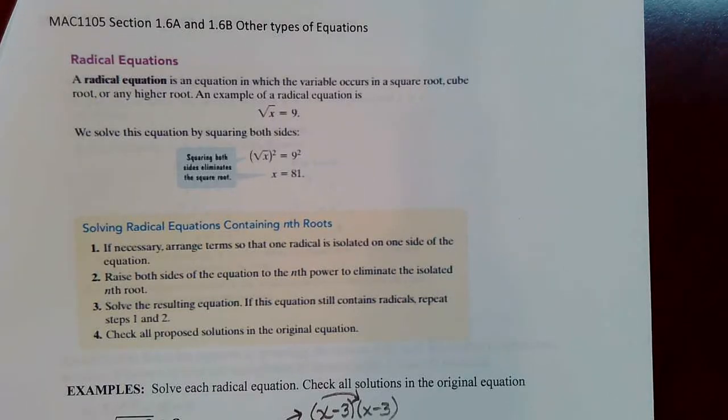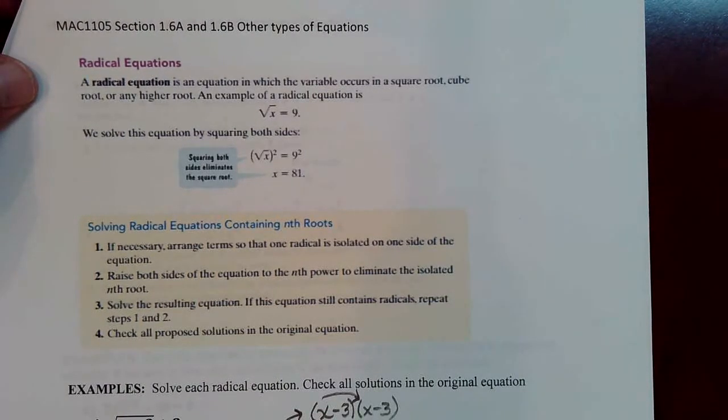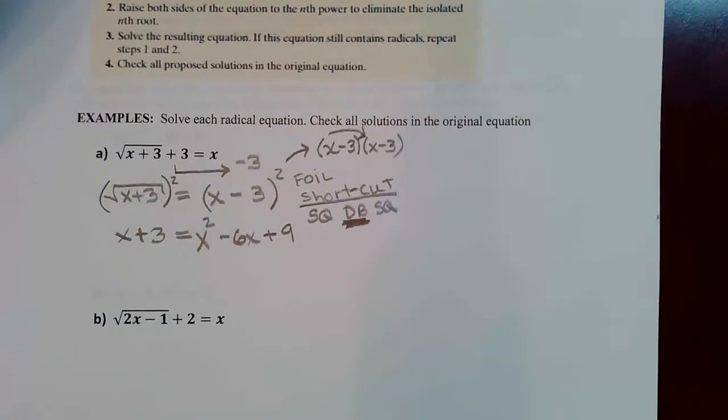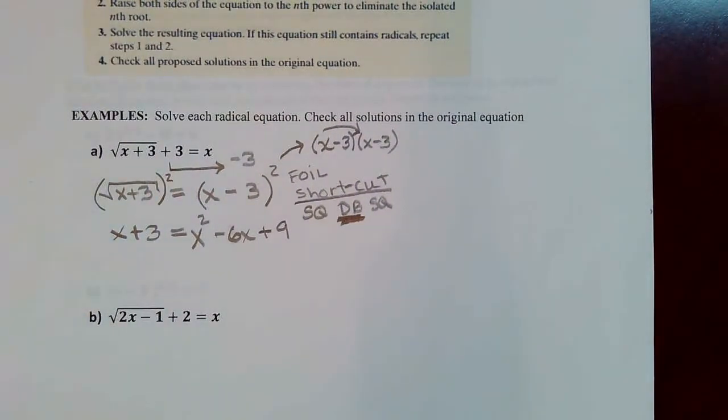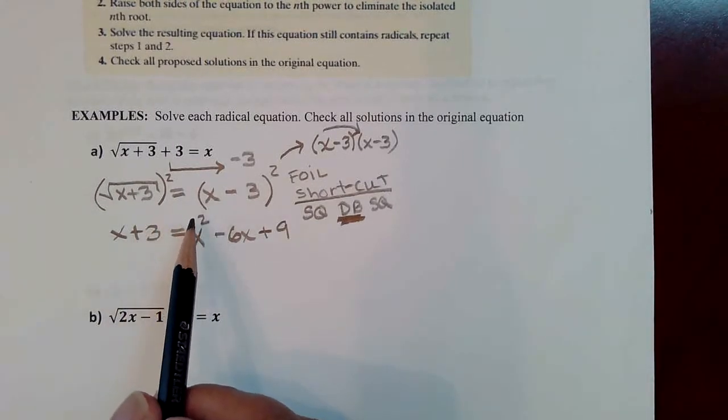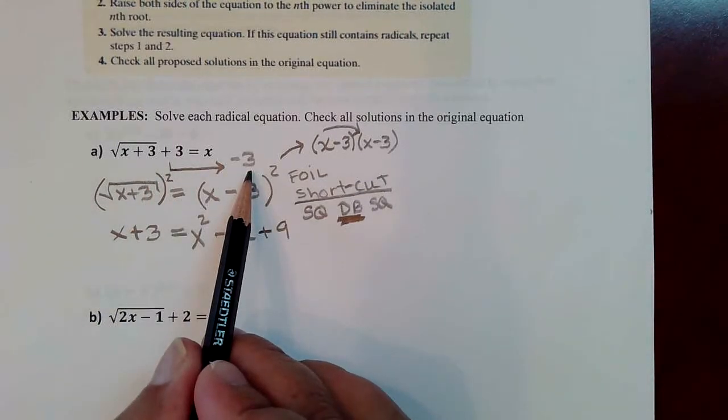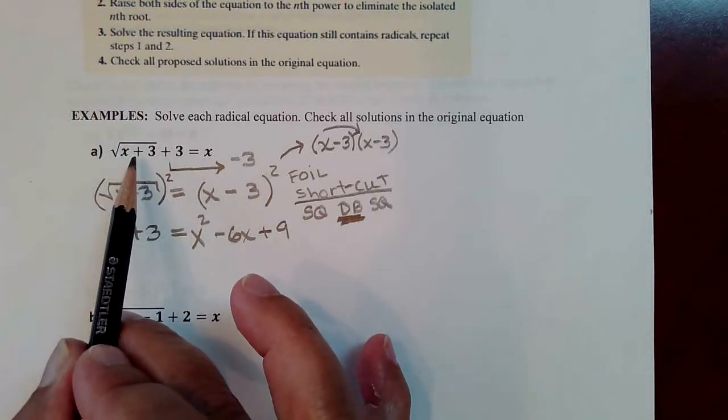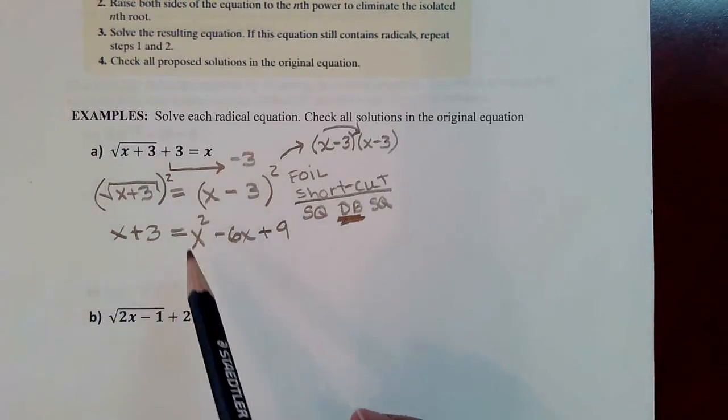This is a continuation of section 1.6 for MAC 1105. We were talking about solving radical equations and working on this first example in the last video. We had gotten to the point where we had brought the 3 over to the other side because you need to isolate the radical expression before squaring each side.